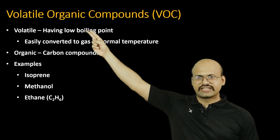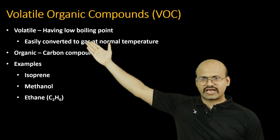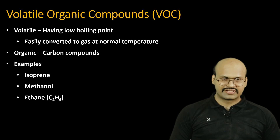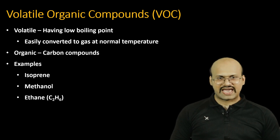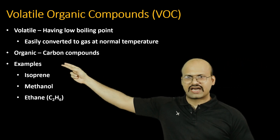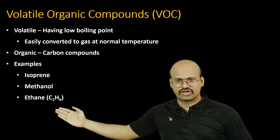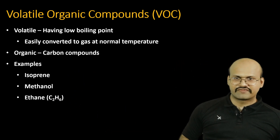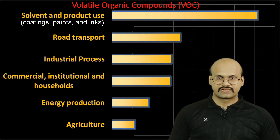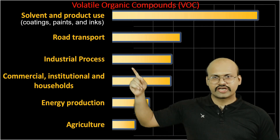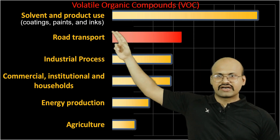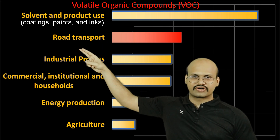Secondly, there are volatile organic compounds. By 'volatile' we mean substances with a very low boiling point — they are easily converted into gases at room temperature. 'Organic' means they are carbon-based compounds. Isoprene is the most common VOC. VOCs are also emitted by road transport as well as certain chemical processes, and road transport VOC emissions are particularly important.